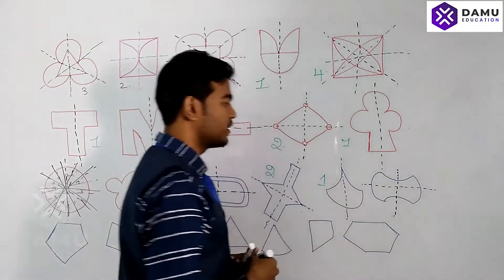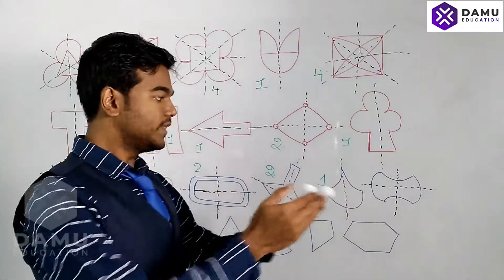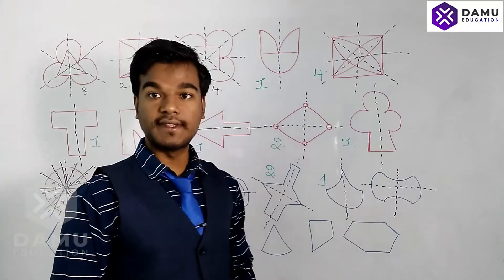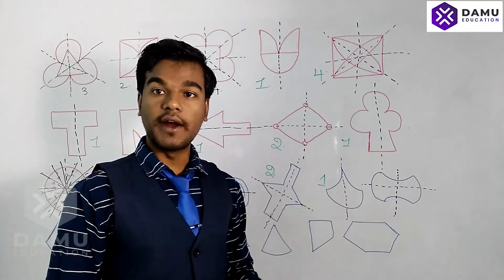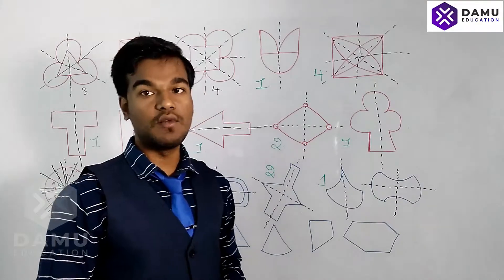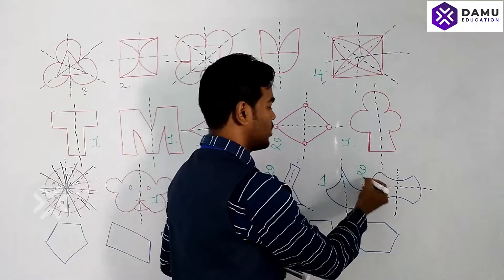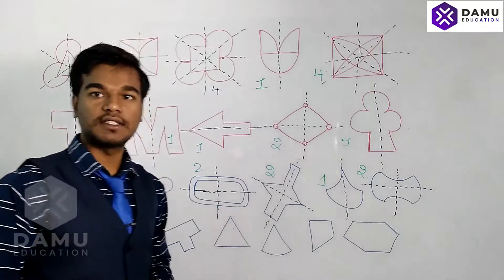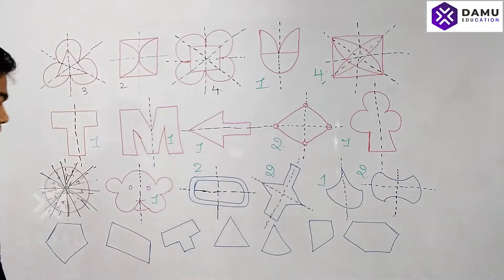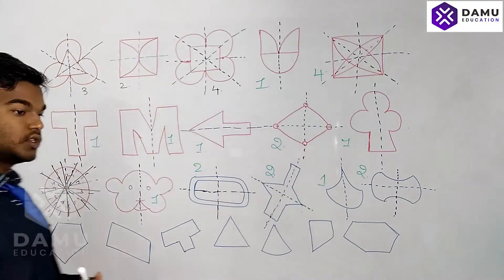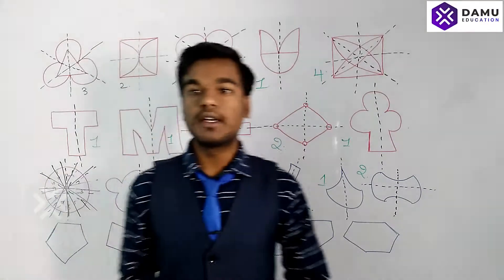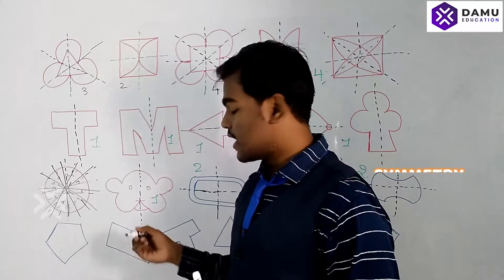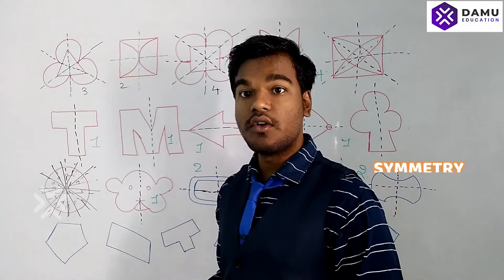For the next shape, both a vertical line of symmetry and a horizontal line of symmetry exist. If you fold it along either, the halves will coincide. So two lines of symmetry exist for that shape.